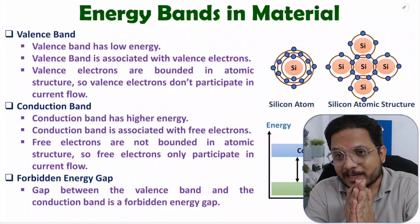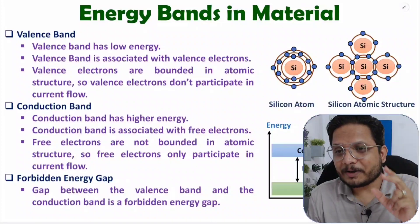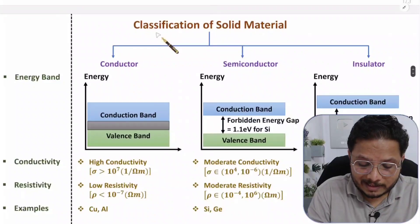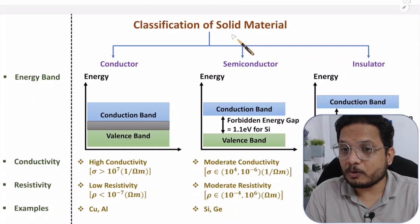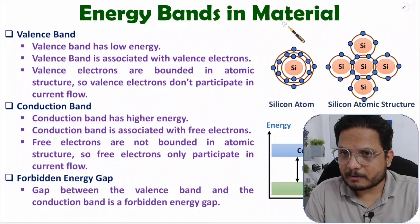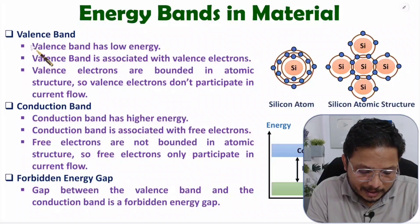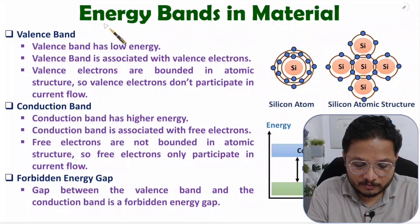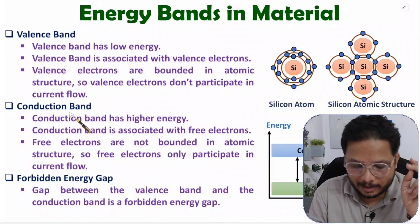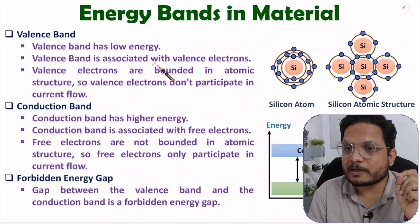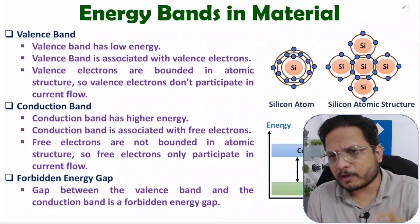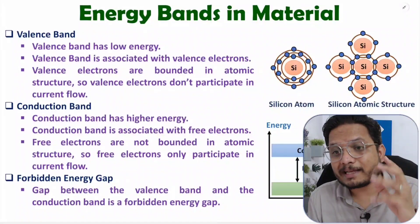Hello friends, welcome to Engineering Funda. In this video I'm going to explain energy bands and the classification of solid materials with respect to energy bands. Basically there are two categories of bands available in materials in terms of energy bands: valence band and conduction band. Valence band is associated with valence electrons and conduction band is associated with free electrons.